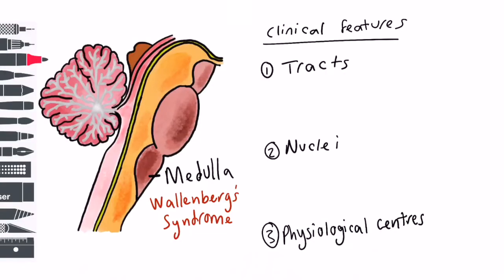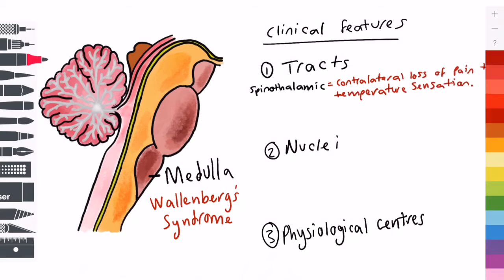We can consider its presentation in terms of the brainstem structures that are affected as divided into the three main categories we talked about earlier: tracts, nuclei, and physiological centres.